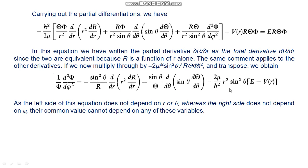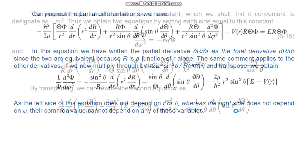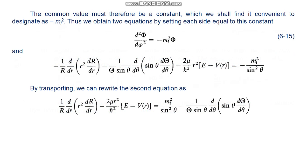Since the left side does not depend on r or theta and the right side does not depend on phi, the common value must be a constant, which we designate as minus m_l squared. We thus obtain two equations by setting each side equal to this constant: formula 6.15 for Phi(phi), and another equation. By transposing we can rewrite the second equation in a form whose left side does not depend on one variable and right side does not depend on the other.